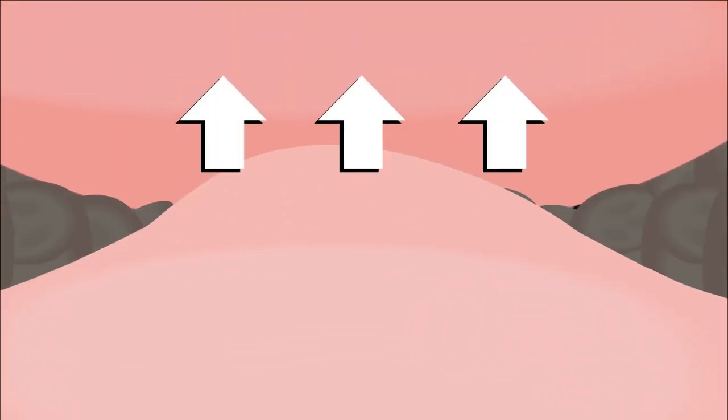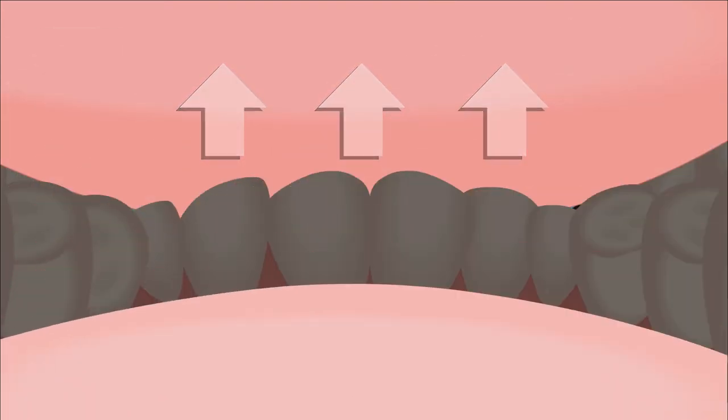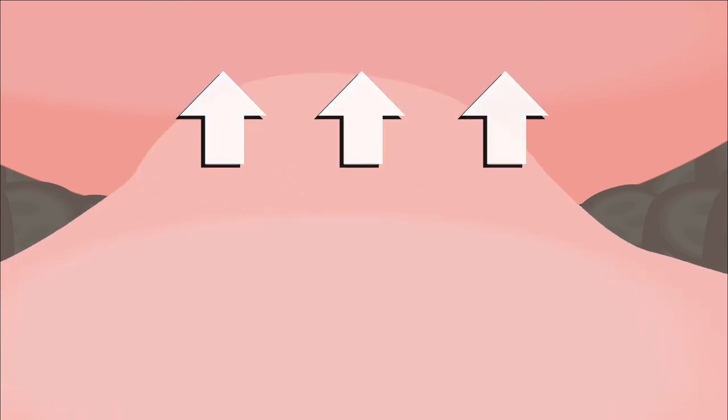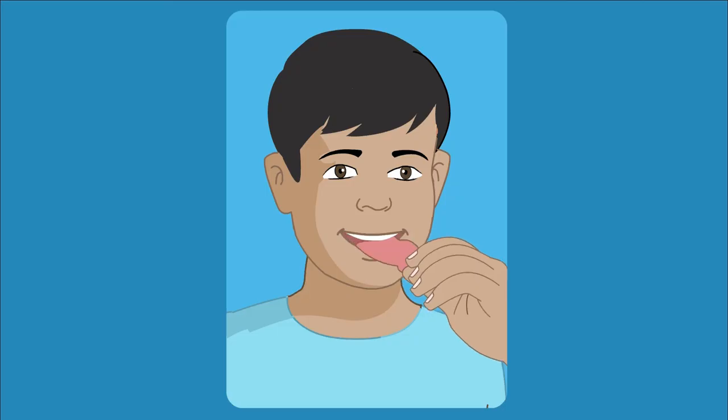Then bite down on the guard and continue to evenly press up while sucking the excess air out. Do not press too hard where the metal wires are. This may cause the guard to become too thin and split. The custom forming should take about 10 seconds.